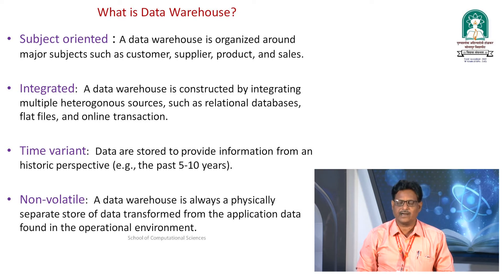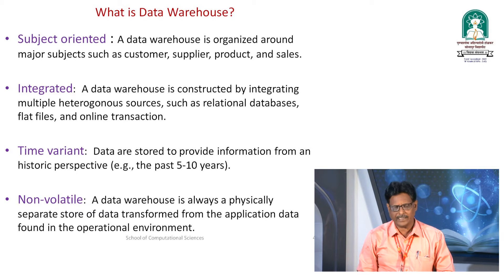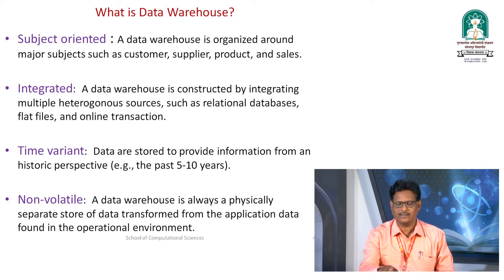Next is time-variant. Data are stored to provide information from a historic perspective. For example, if you want to gather information ranging from the past 5 to 10 years, you can do so by specifying a time span. And the last component, non-volatile, means we need to store data on physical storage media. A data warehouse is always a physically separate store of data, transformed from the application data found in the operational environment.